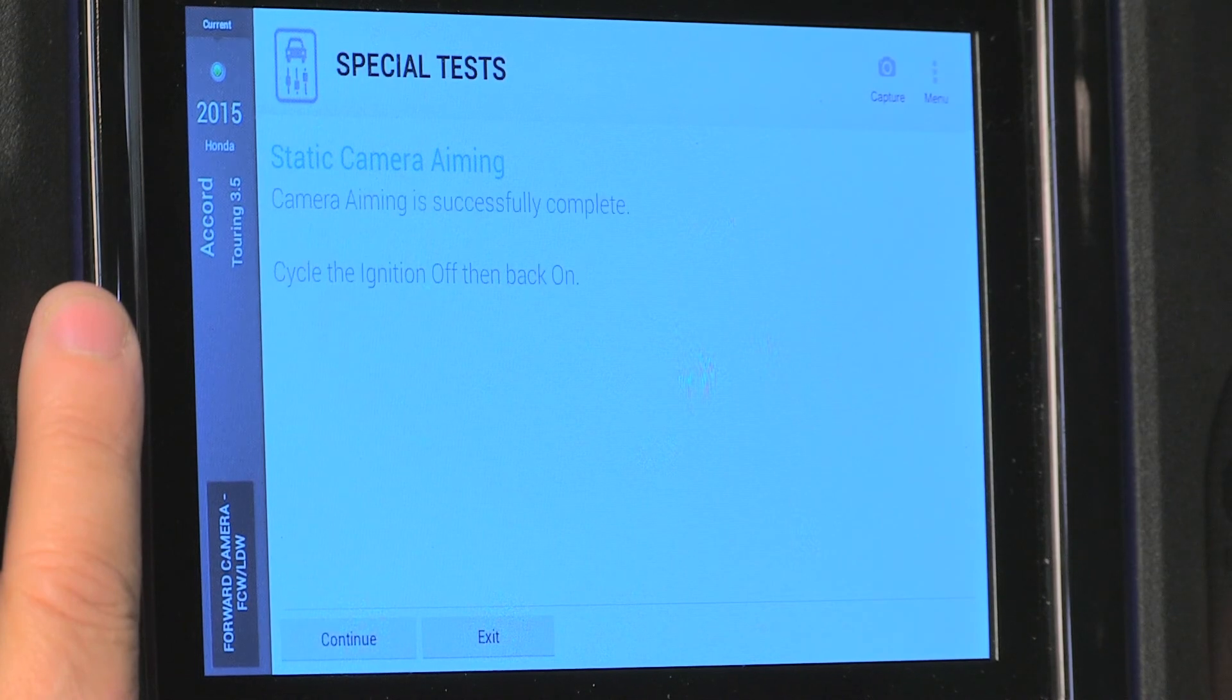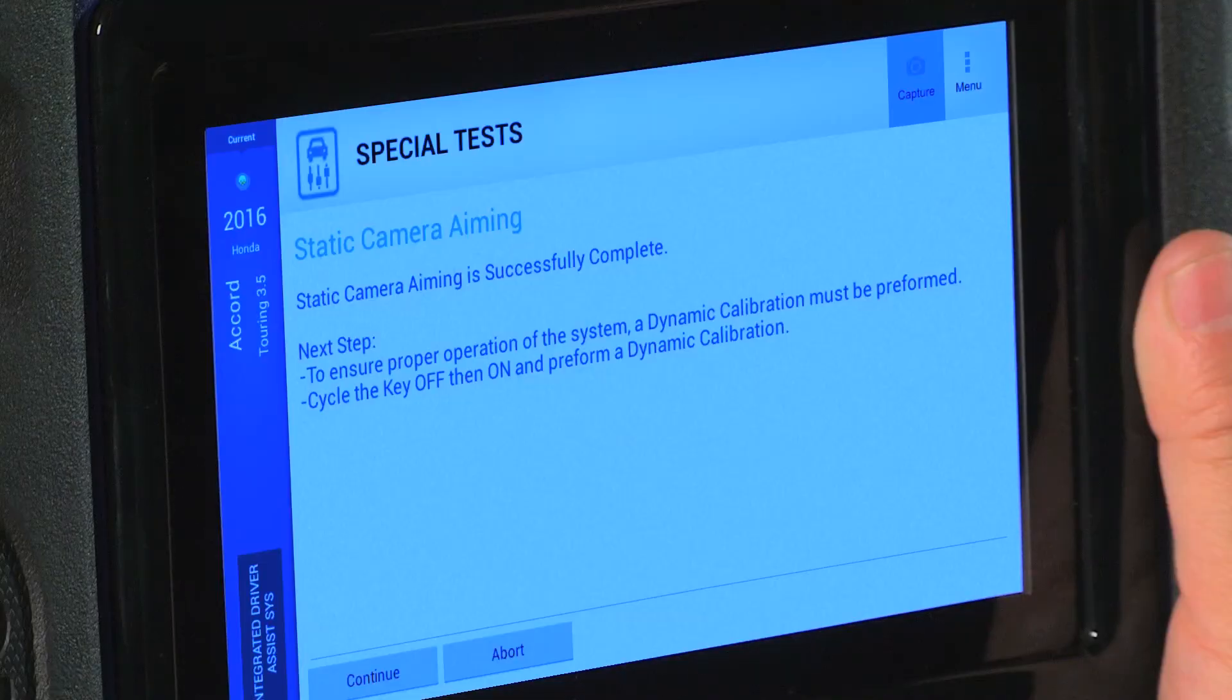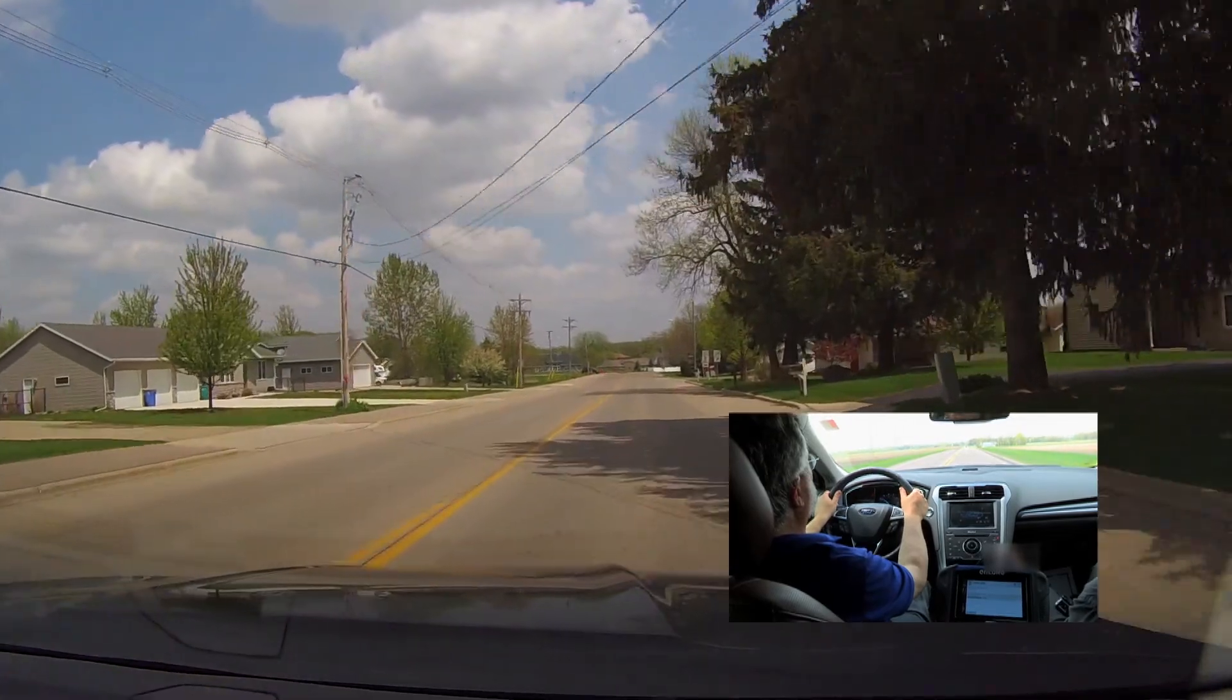After a successful static camera calibration, you must perform a dynamic calibration to ensure proper operation. You must turn the key off, then on, and now go ahead and perform the dynamic calibration.